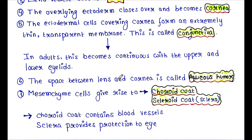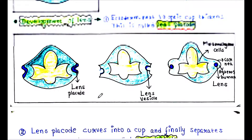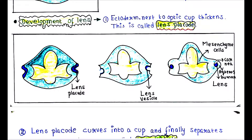In adults, the conjunctiva becomes continuous with the upper and lower eyelids. The space between the lens and cornea is called the aqueous humor.